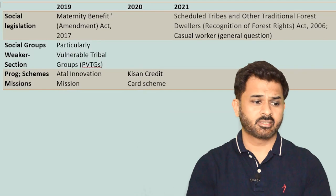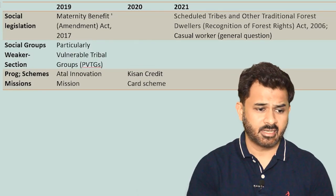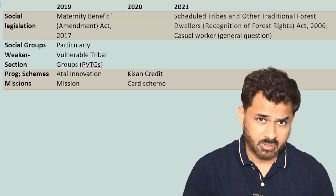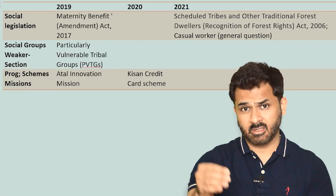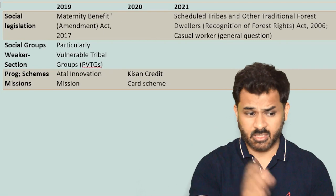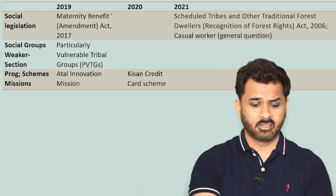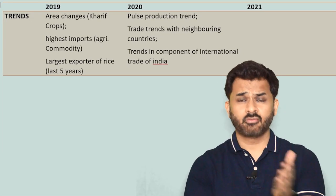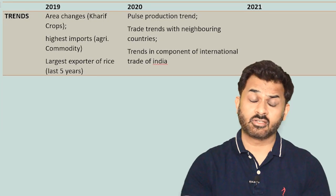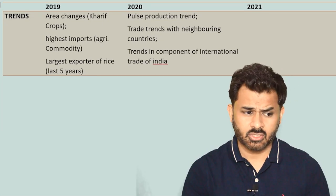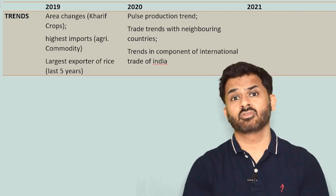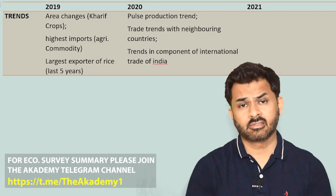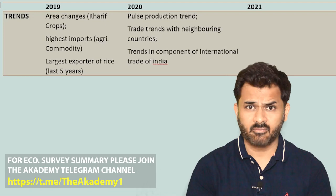In the social sector, questions are mostly asked on social legislation — not every year but often — especially legislation from the past five years. The programs and schemes of the government from 2014 onwards are important, especially in the social sector. There are also questions related to trends in production and trade, related to geography or economics. Three questions were asked in 2019 and 2020 — there may be one or two such questions, and you can follow up with specific chapters of the economic survey. You can follow our Telegram channel to get summaries of the economic survey.